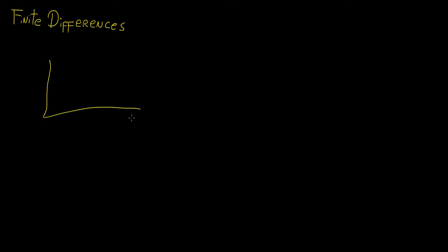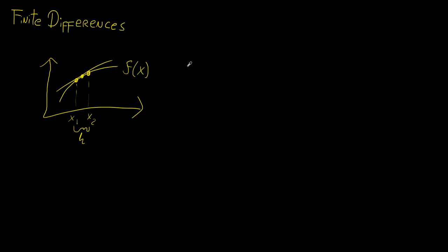Let us recall that a derivative is essentially just a rate of change. If you have a function and you take two points to approximate the slope at a particular point, you take two points equally spaced from that point, let's say x1 and x2, such that the spacing is h. If you take a limit, the derivative of the function with respect to x is just f of x plus h minus f of x, over h.